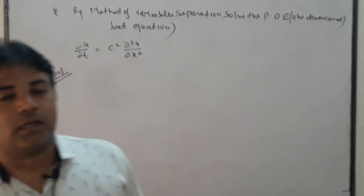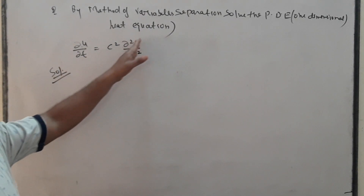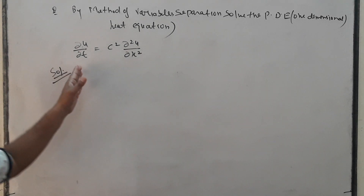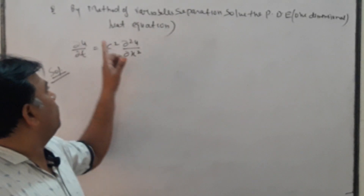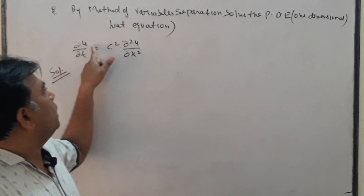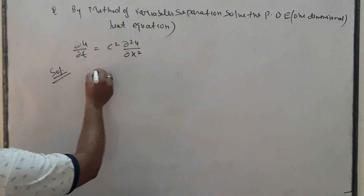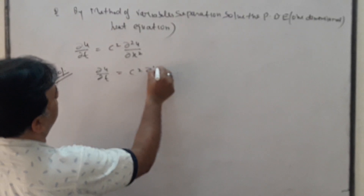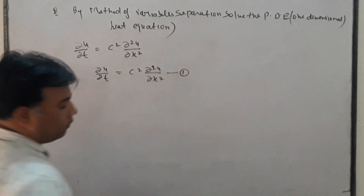We will start with the one-dimensional heat equation. It means u will represent the temperature, which depends upon x and t. The equation is: ∂u/∂t = c² · ∂²u/∂x². This is equation number one.